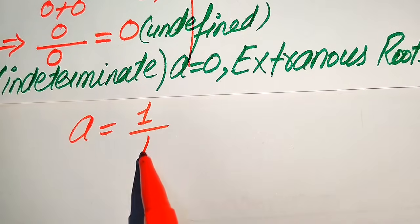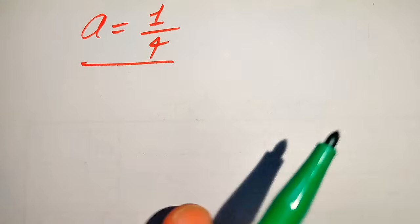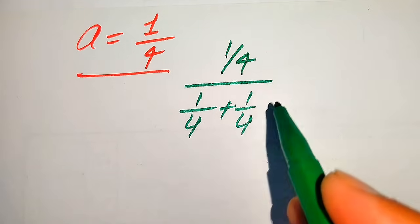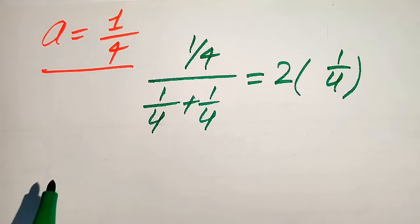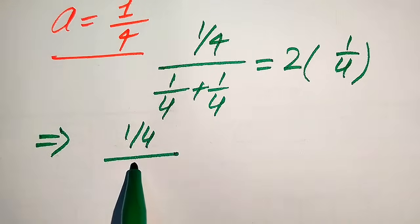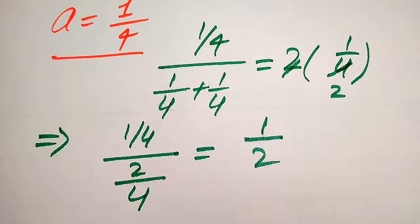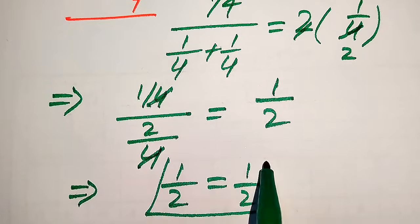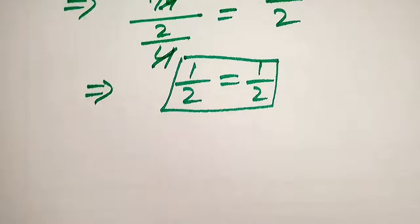Now we check the second root, a equals one-fourth. Substituting into the left-hand side gives (1/4) divided by (1/4 plus 1/4) equals 2 times (1/4). Taking the LCM, 1/4 plus 1/4 equals 2/4. So we get (1/4) divided by (2/4), which simplifies to one-half, and the right-hand side 2 times (1/4) also equals one-half. So 1/2 equals 1/2, meaning a equals one-fourth is the only solution.